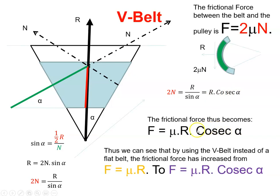That's interesting, because when we did it originally for a flat belt, this was the frictional force μR. With the V-belt, it's now μR cosecant alpha. So the friction force has increased by a value of cosecant alpha. Instead of μ now, we're going to be using μ cosecant alpha.